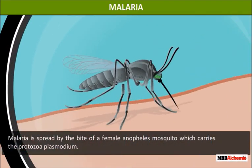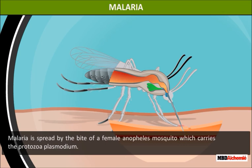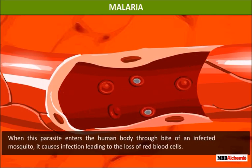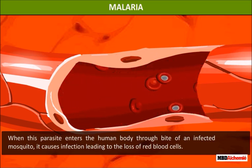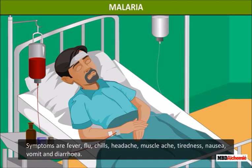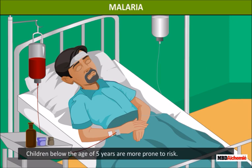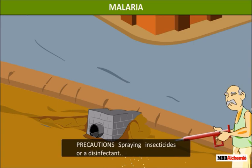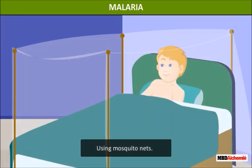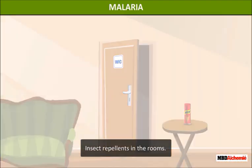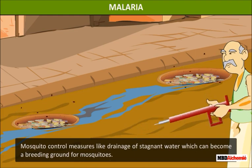Malaria is spread by the bite of a female Anopheles mosquito which carries the protozoa Plasmodium. When this parasite enters the human body through the bite of an infected mosquito, it causes infection leading to the loss of red blood cells. Symptoms are fever, flu, chills, headache, muscle ache, tiredness, nausea, vomiting, and diarrhea. Children below the age of 5 years are more prone to risk. Precautions: spraying insecticides or disinfectants, using mosquito nets and insect repellents, and drainage of stagnant water which can become a breeding ground for mosquitoes.